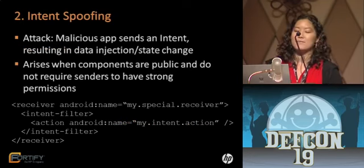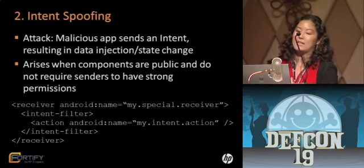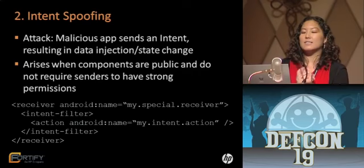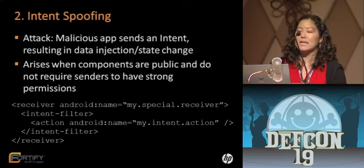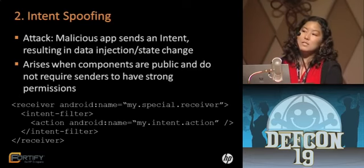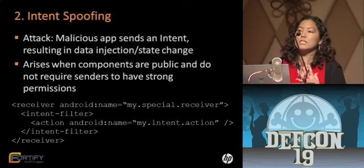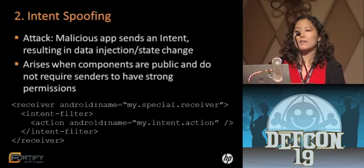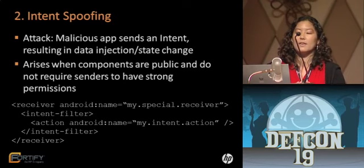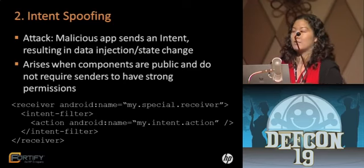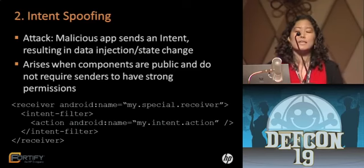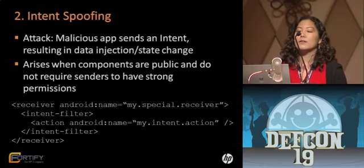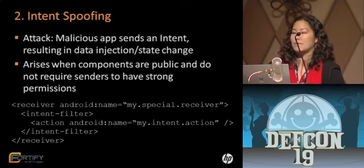The second vulnerability is intent spoofing. Here the attack is that a malicious application sends an intent into a legitimate application. If the legitimate application trusts the intent and uses the data in it, that results in data injection. Receiving that intent can also change the application's state. This problem arises when components are public and don't require senders to have any strong permissions.